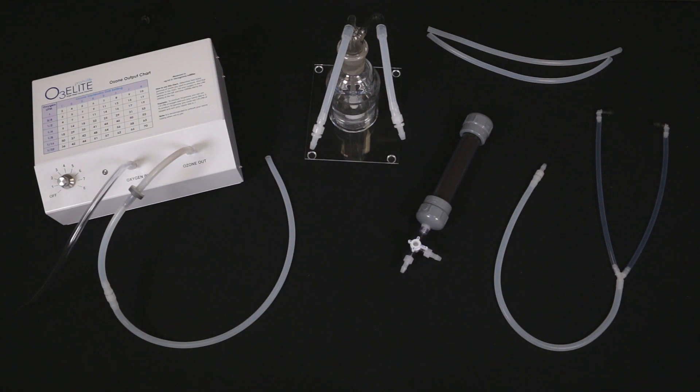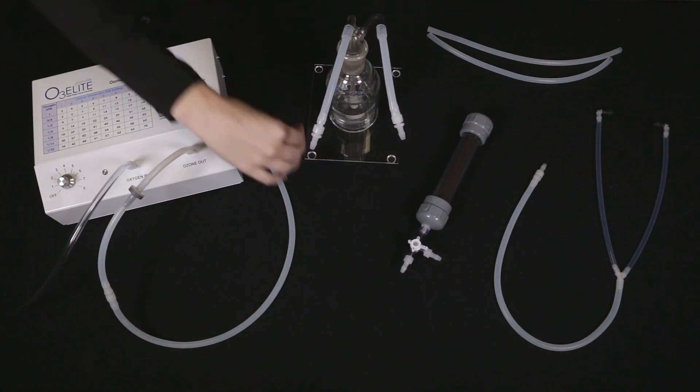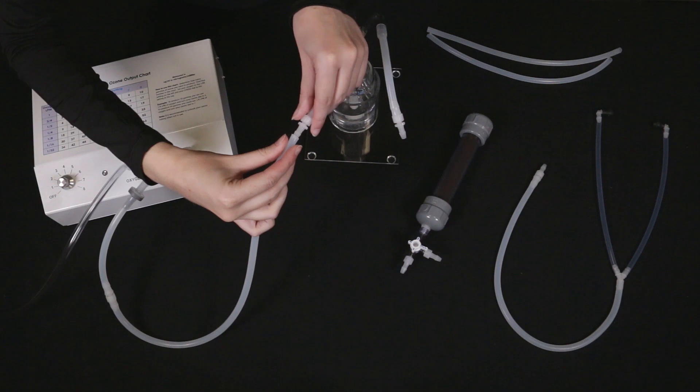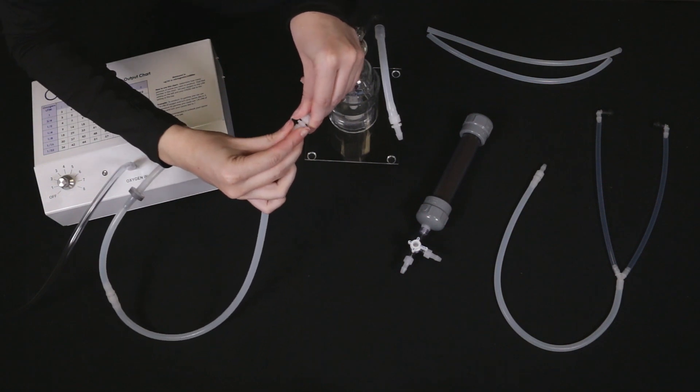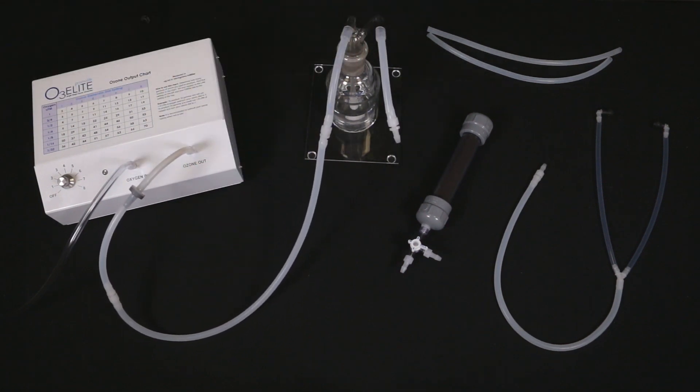Now, back to the 200 mL Humidifier. Connect the other end of the 5-foot piece of silicone tubing to the glass straw that goes all the way into the humidifier. We also call this the Ozone In Straw.